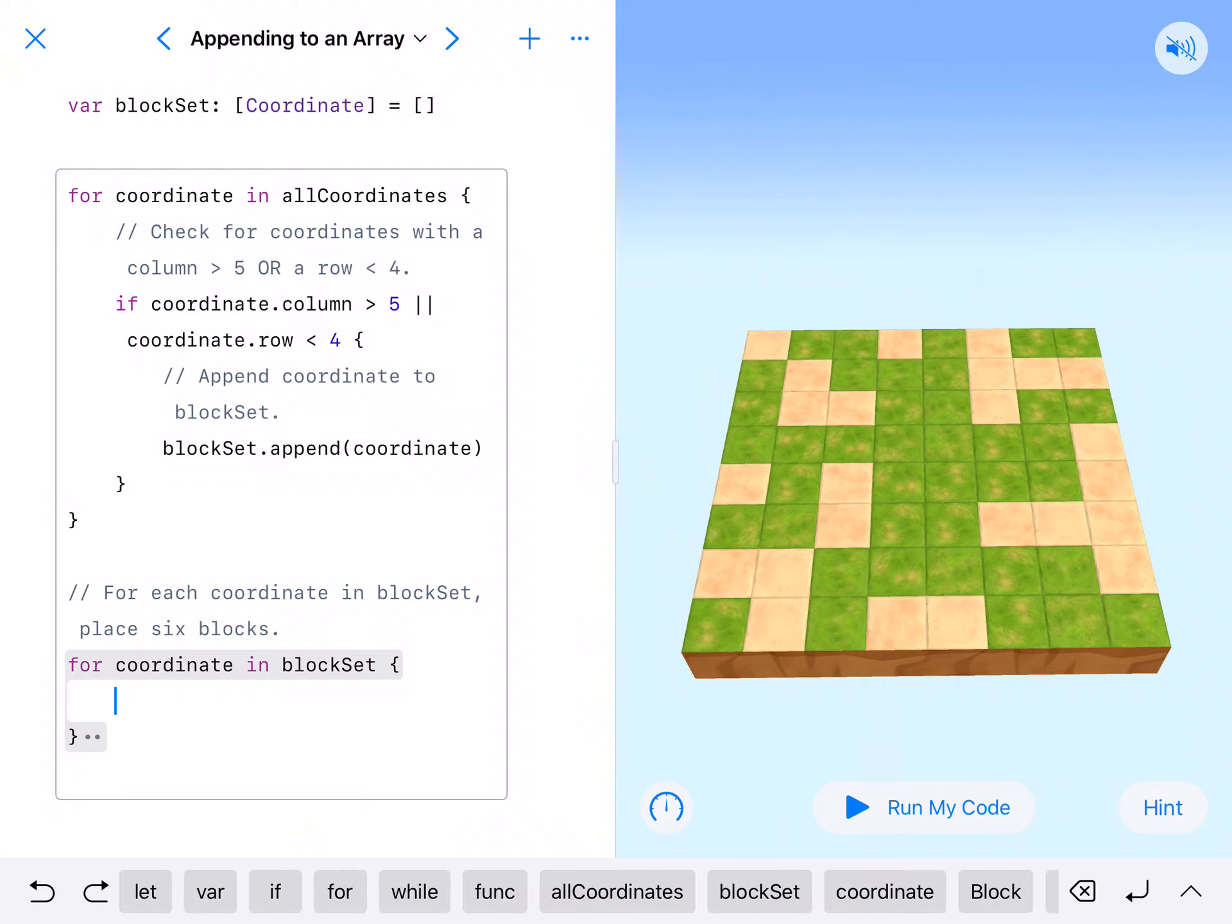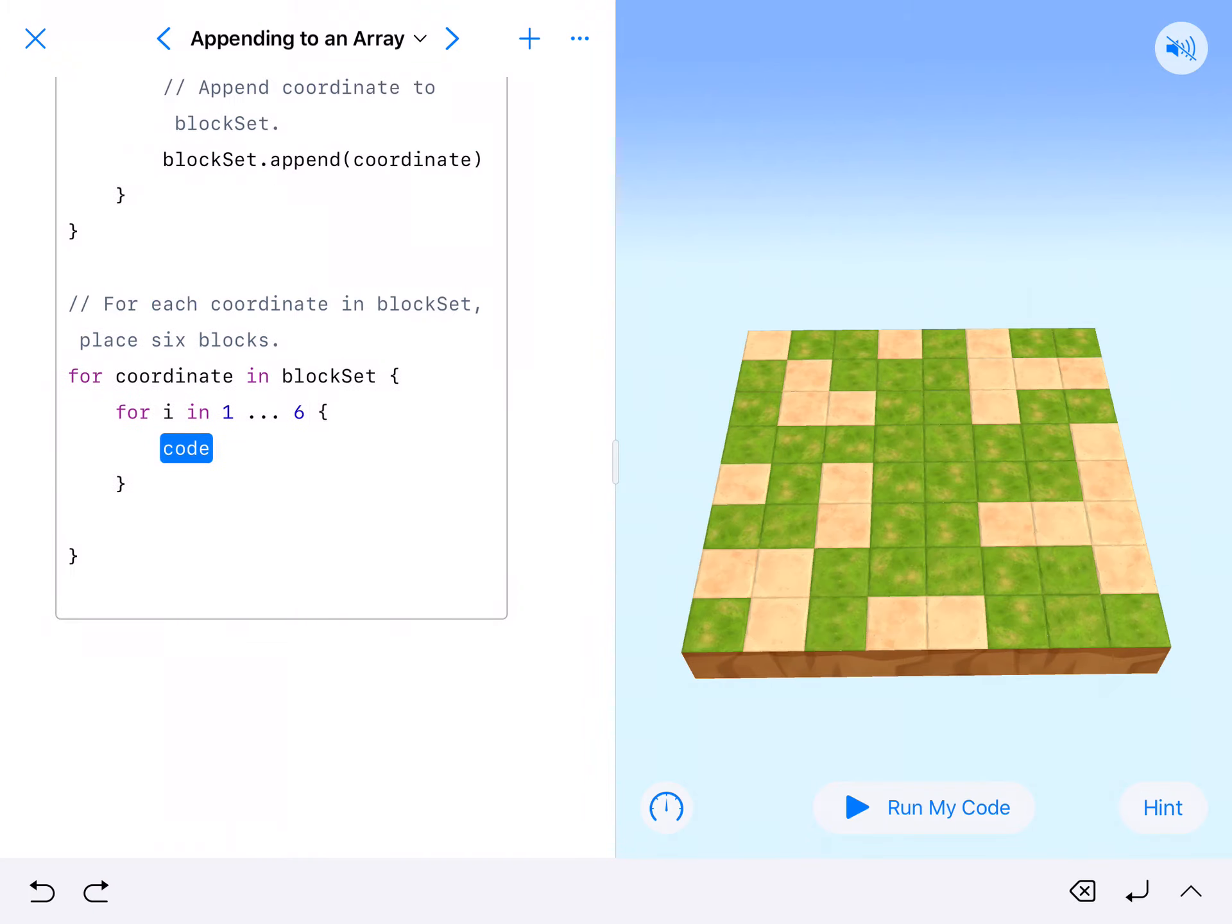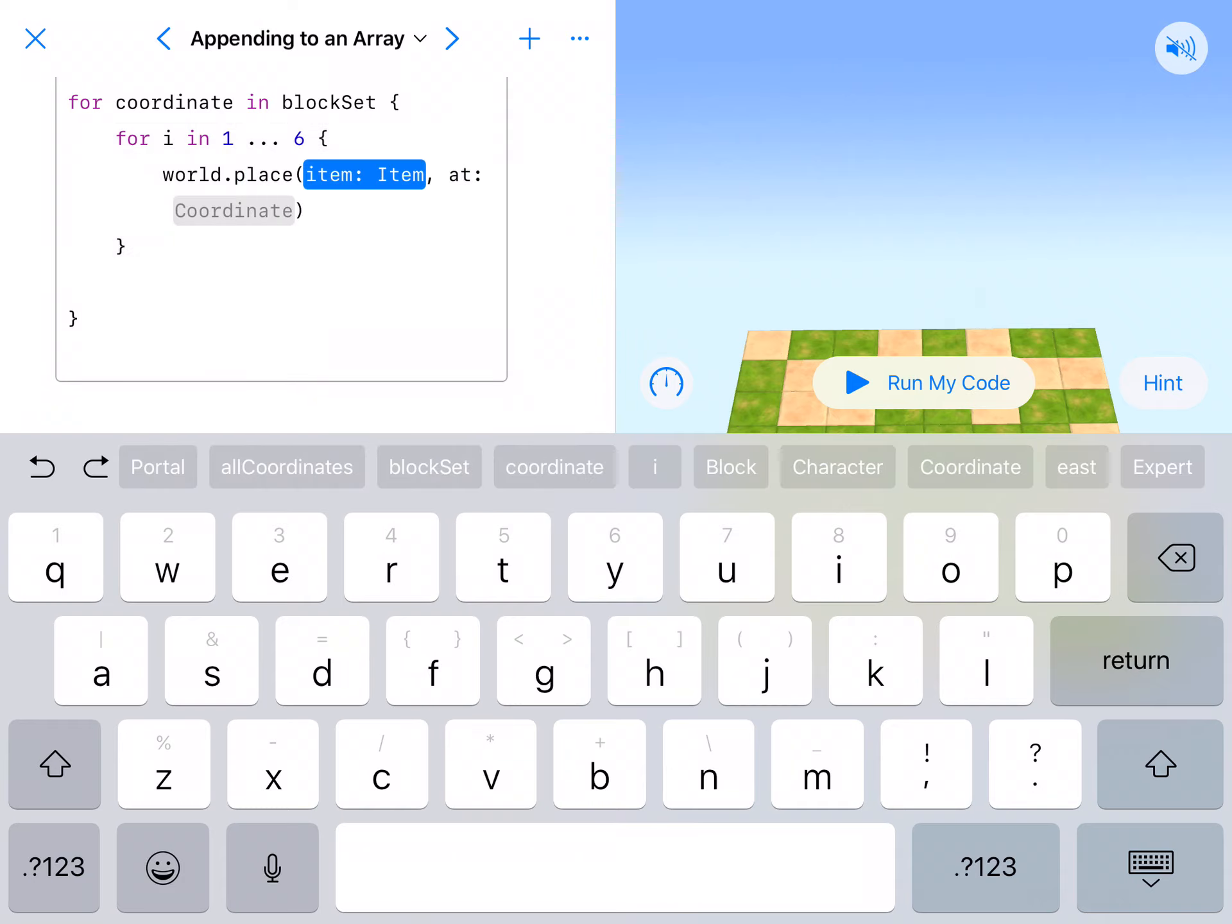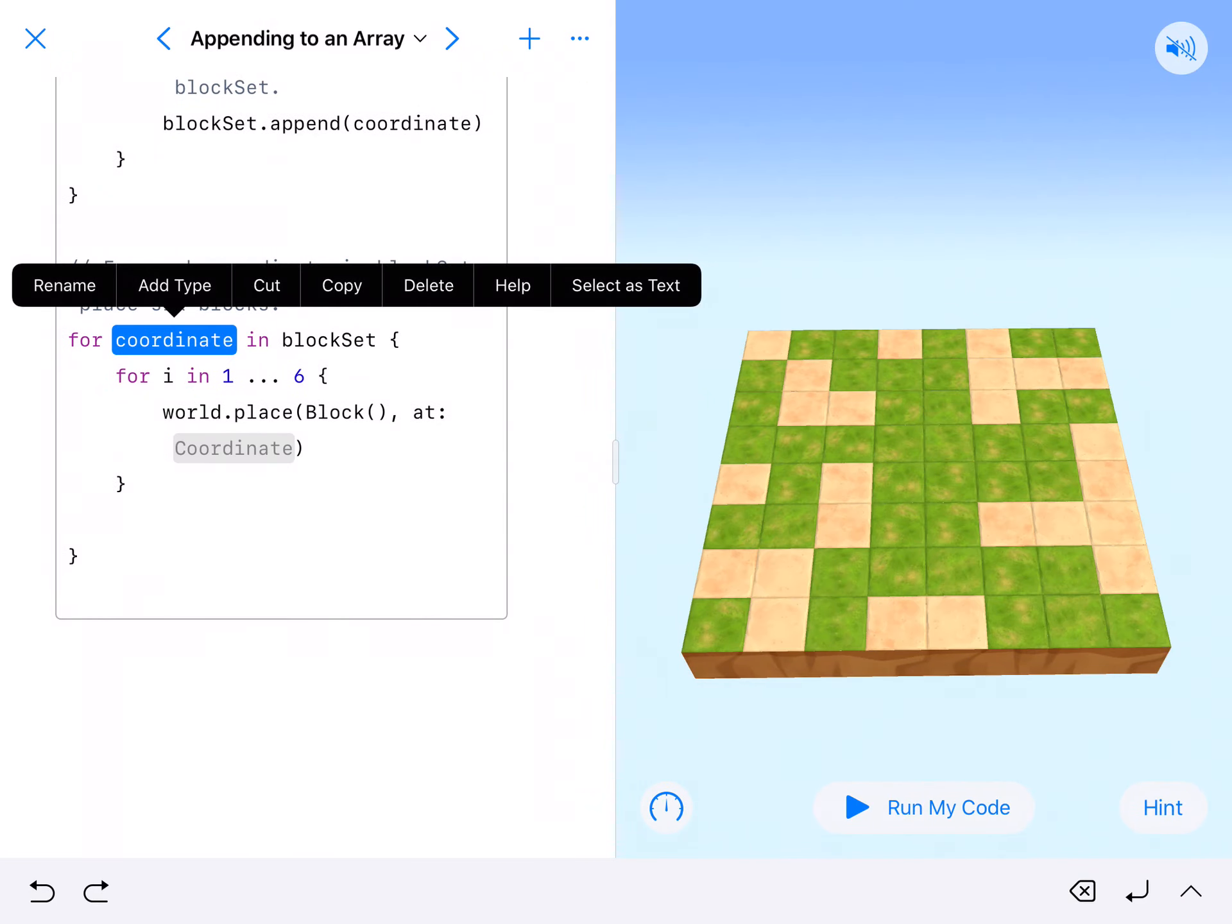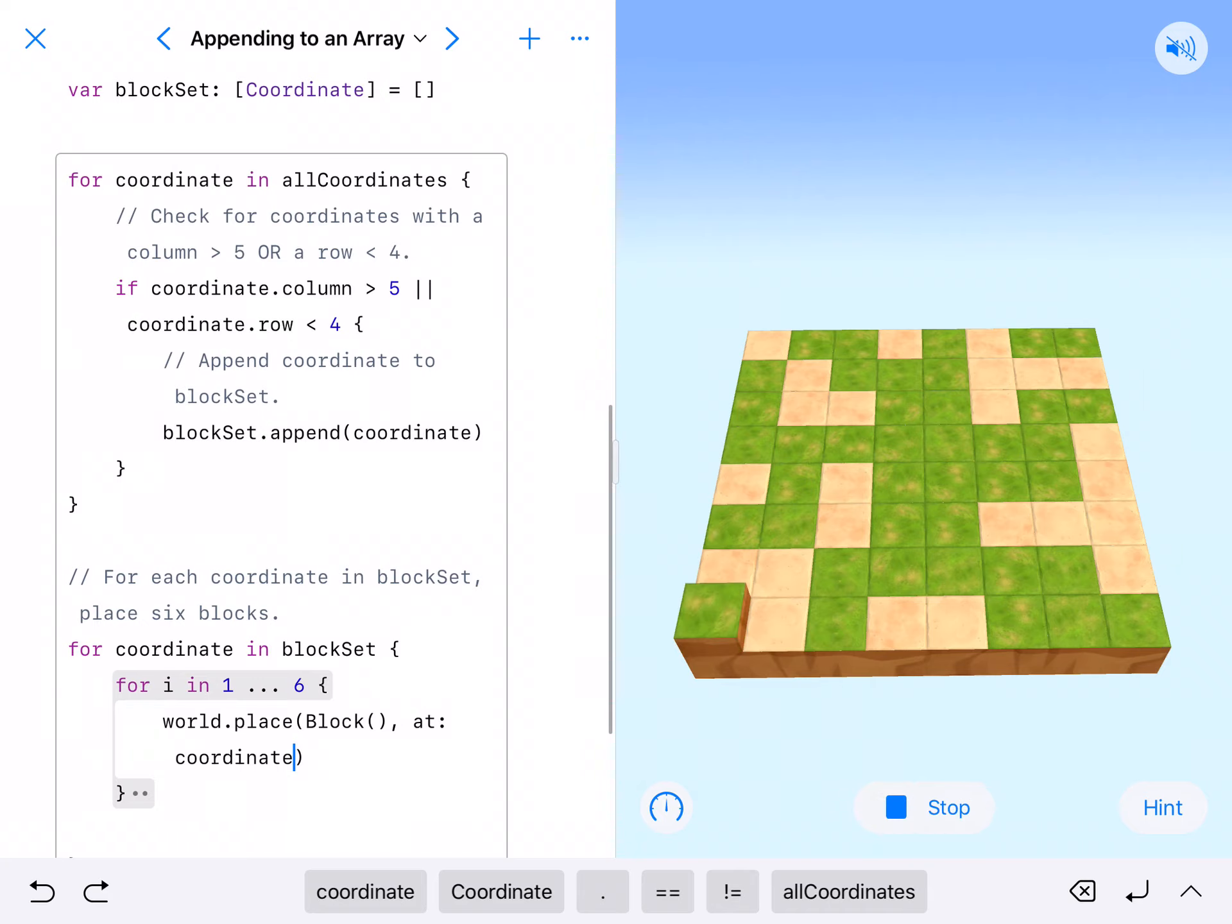So we have our empty array. We didn't put anything in there. So this allows us to manipulate this as we want it. So for coordinate in block set, we're going to put what does it say? Six blocks. So I need a for loop. So for one through six, we're going to world dot place, place item, capital block with parentheses at lowercase coordinate. Remember, we need to reference whatever our loop name is. So lowercase coordinate. All right. So that makes this usable code.